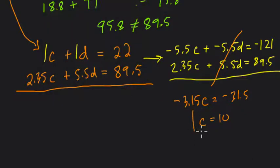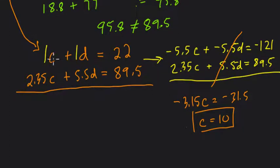So that means there were 10 cats on that day. And since the cats plus the dogs is 22, there are also 12 dogs.